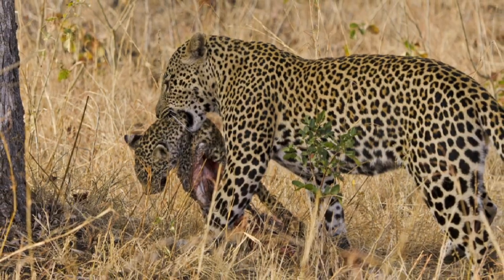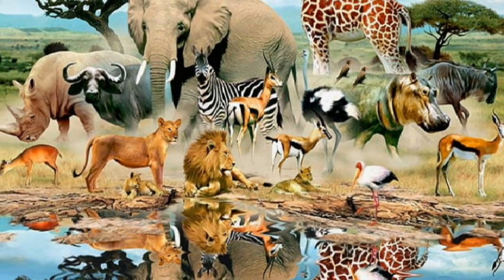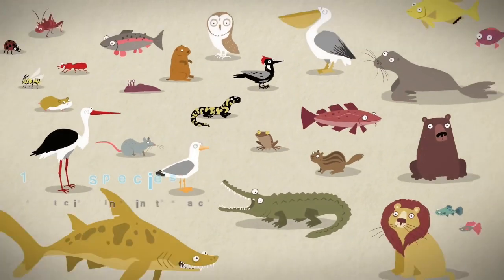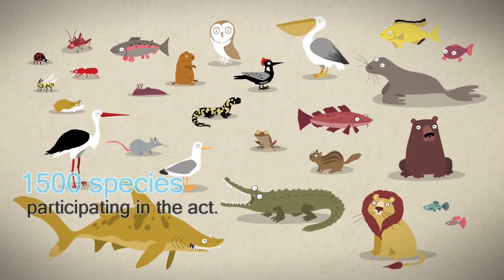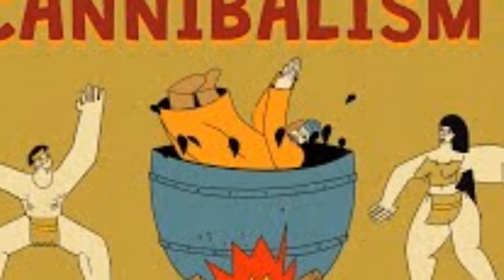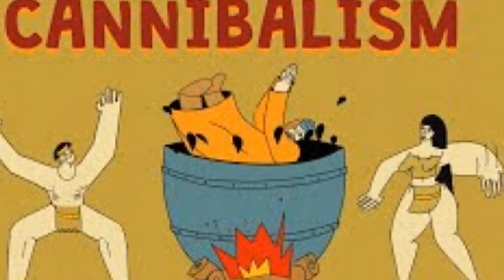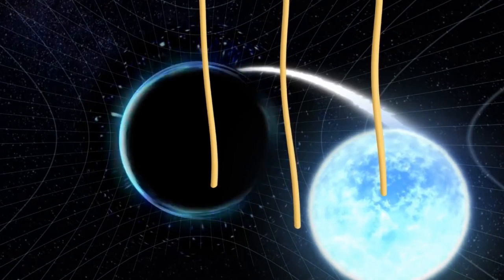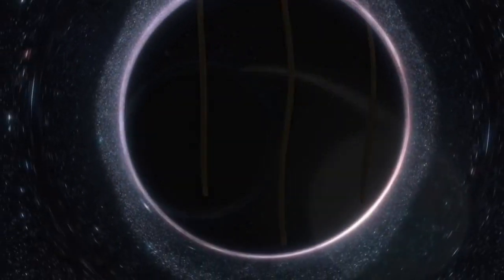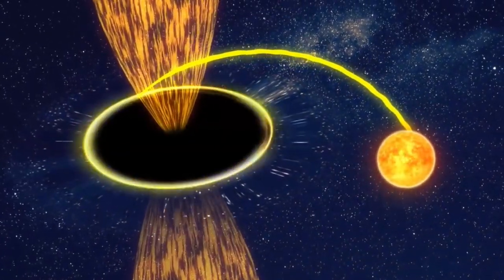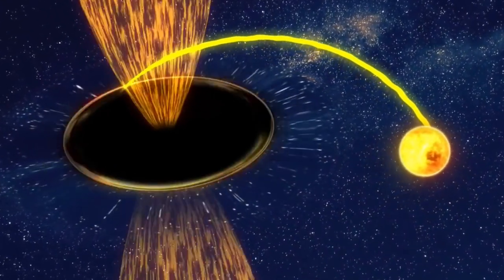Galaxies eat themselves. Cannibalism is a constant feature in the animal kingdom, with over 1,500 species participating in the act. It happens occasionally amongst humans as well. But who would have thought that gigantic cannibalism would be a thing? Well, it is. In fact, there's a well-documented 10 billion-year-old history of big galaxies consuming other smaller galaxies.